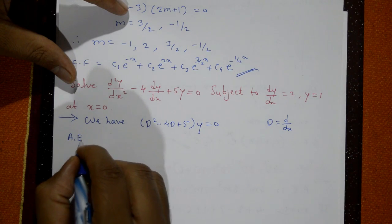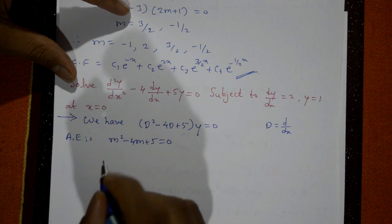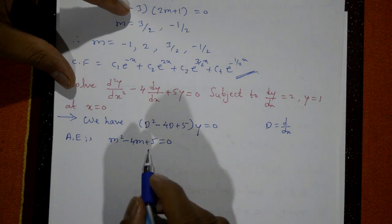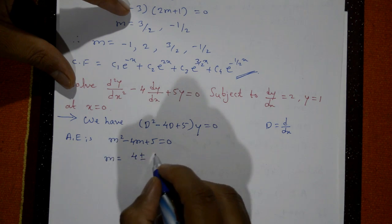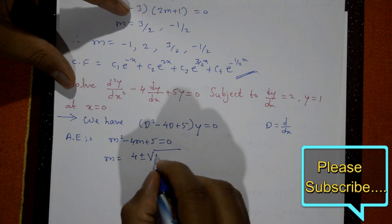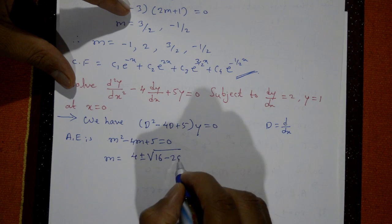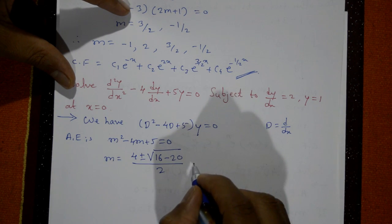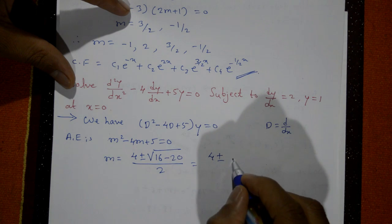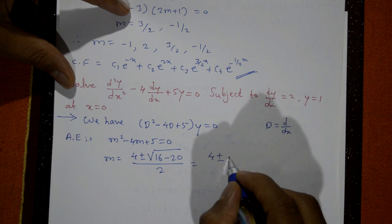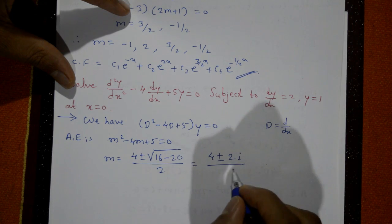The auxiliary equation is m² - 4m + 5 = 0. Using the quadratic formula: m = (4 ± √(16 - 4·1·5)) / 2 = (4 ± √(16 - 20)) / 2 = (4 ± √(-4)) / 2. Now √(-4) = 2√(-1) = 2i, divided by 2.